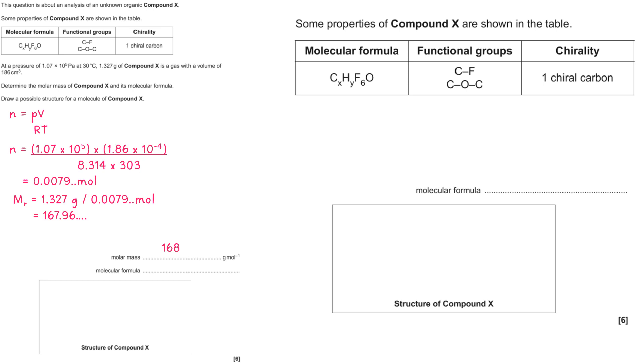The next part of the question gives us some specific information we need to use. X has six fluorine atoms. The structure must contain a carbon-fluorine bond and an ether functional group. You don't need to know about an ether functional group which is this here. You just need to know for the purpose of this question that you have an oxygen bonded to two carbons either side. And the chirality aspect means one of the carbon atoms must be attached to four different atoms or groups.